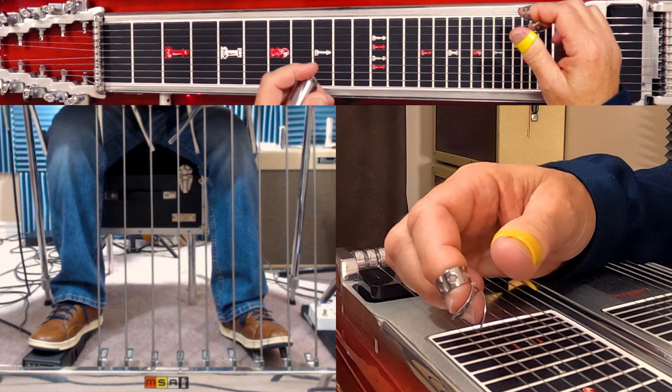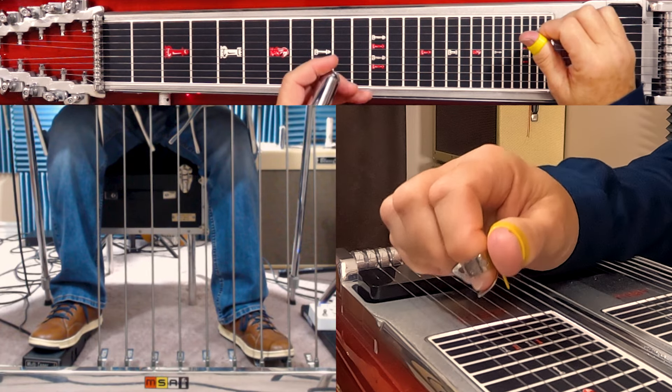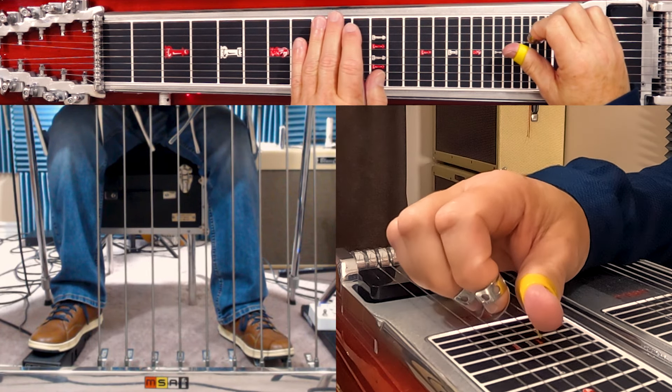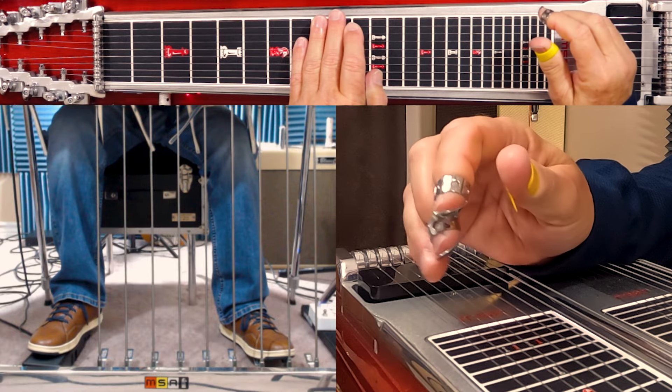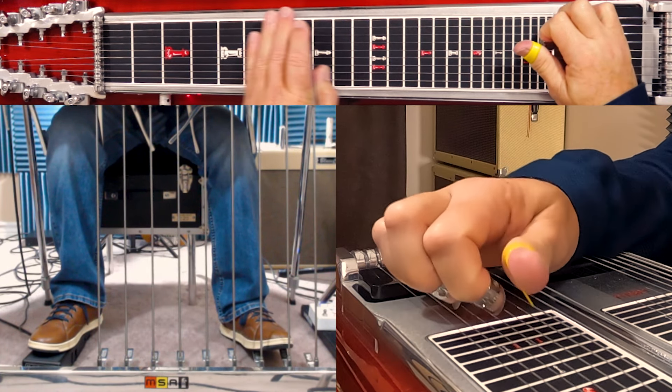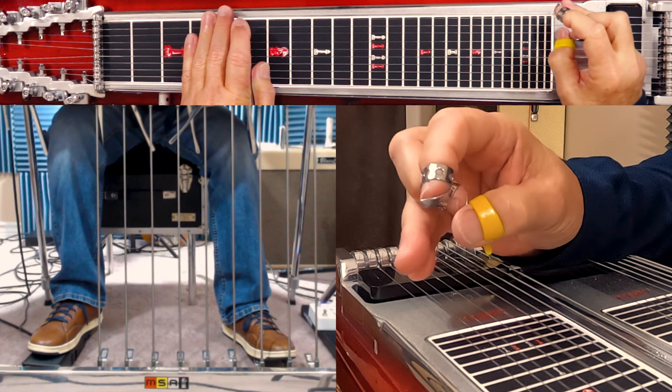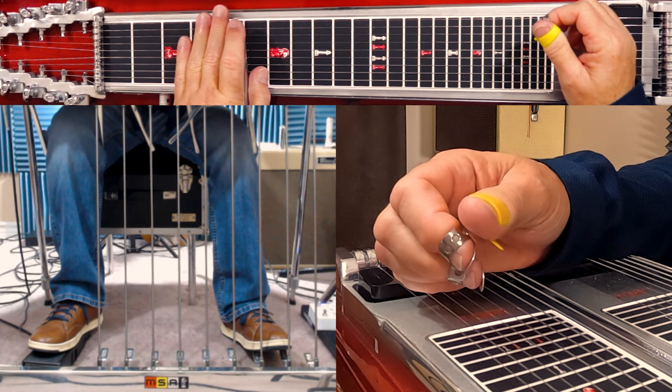Now the next chord we're playing over is a G. Pedals down position for G is your tenth fret. Do the same exact lick, but now it's playing over a G chord. That's playing over the A chord, and then it resolves back down to the D.